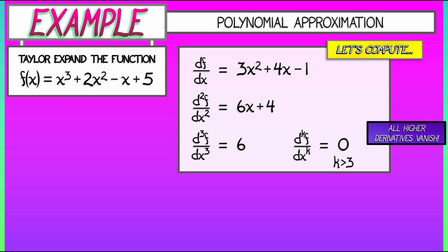So what we have to do next is take these derivatives and evaluate them at the origin, where x equals 0, but that just means we pull out the constant terms in these polynomials. So the first derivative at 0 is negative 1, the second derivative at 0 is positive 4, and the third derivative at 0 is positive 6, all higher derivatives vanishing.